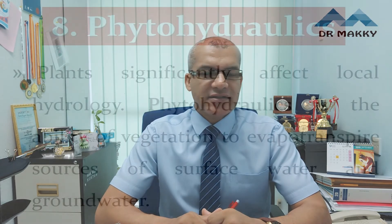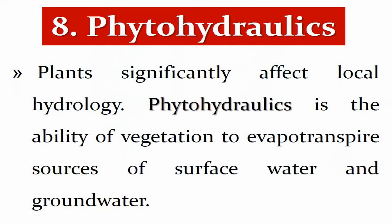The final mechanism is phytohydraulics, which depends on local hydrology. Phytohydraulics refers to the ability of plants to evapotranspire from surface water and groundwater sources. Evapotranspiration combines both evaporation and transpiration in one process, and this is the process related to phytohydraulics.